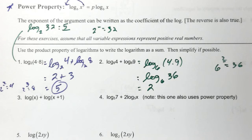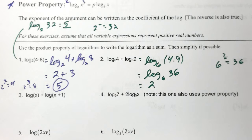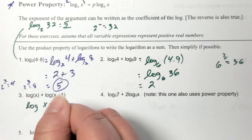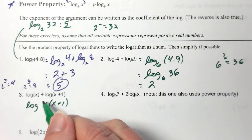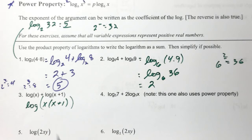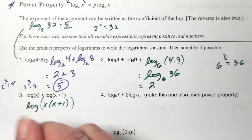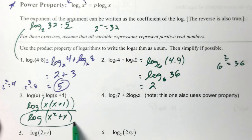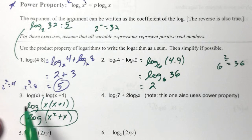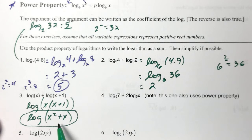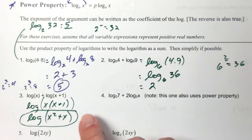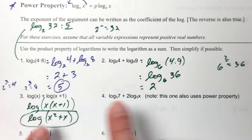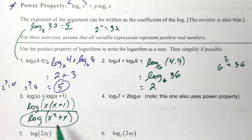Here's another one — we're adding two logs together. The base is implied to be ten, so we can multiply those arguments: x times (x plus one). That whole thing is the argument, so I put a big set of parentheses around it. Distributing the x gives log of (x squared plus x). I put parentheses around x squared plus x because that entire expression is the argument — without parentheses someone might think only x squared is the argument and the x is just some random thing added at the end.